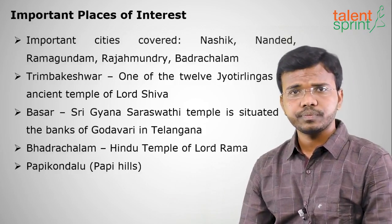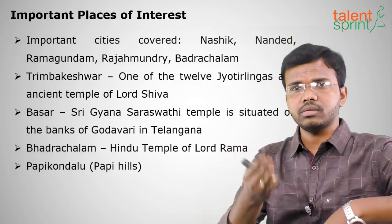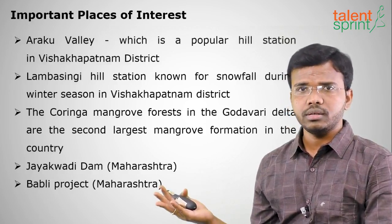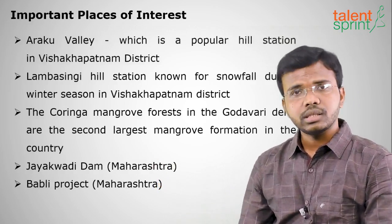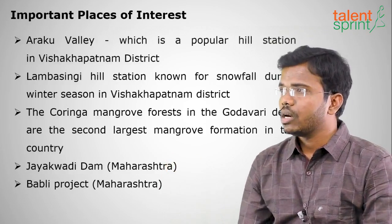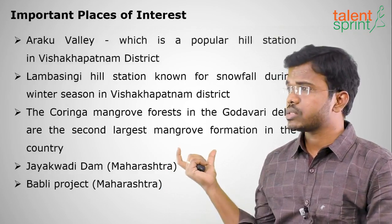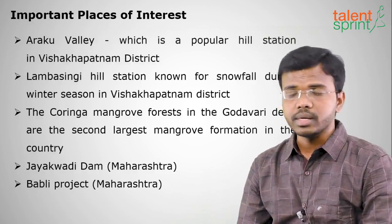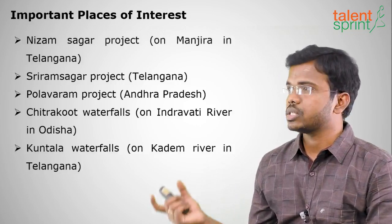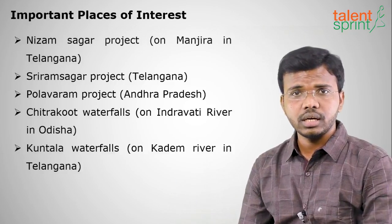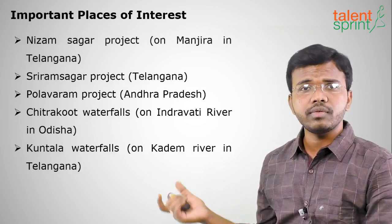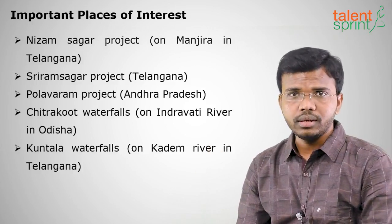Papi Kondalu — the Papi Hills — is a beautiful place in Andhra Pradesh where the Godavari runs through mountain valleys. Aruku Valley is famous for growing coffee and scenic beauty. Lambasinghi is a famous snowfall hill station in Visakhapatnam district. The Koringa Mangroves are the second longest mangrove formation after the Sundarbans. Important dams include Jaikwadi and Babli in Maharashtra, Nizam Sagar on Manjira, and Sriram Sagar in Telangana. Chitrakoot Waterfalls are in Odisha and Kuntala Waterfalls in Telangana.